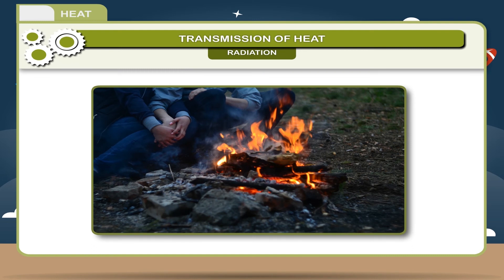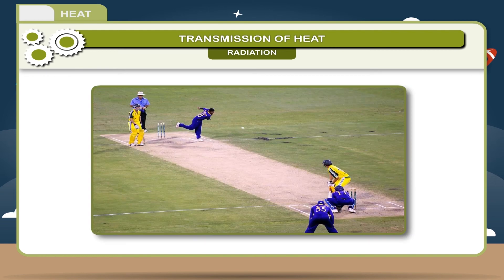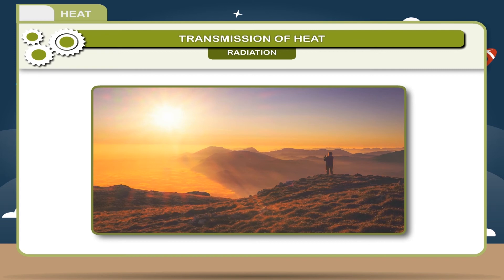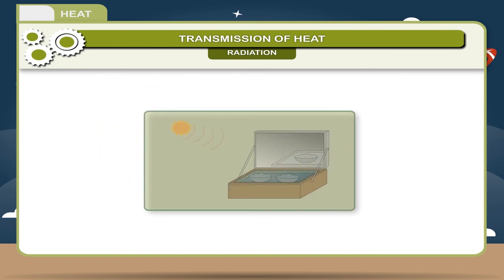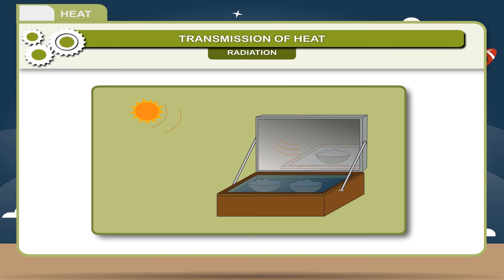Radiation: the process of transfer of heat without any medium present in between is called radiation. Example: a person throws the ball towards the bowler. The heat energy transferred, heating the space in between, which does not require any medium for its transfer is called radiation. Thermal or heat radiations can travel in vacuum with the speed of light — 3 × 10⁸ meters per second.